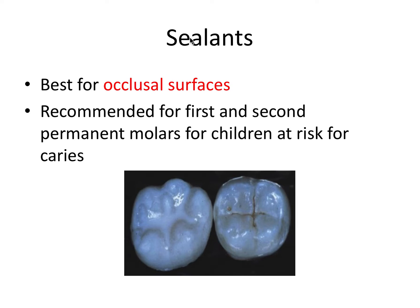Sealants are recommended for first and second permanent molars for children at risk for caries. They smooth over the fossa and grooves of these teeth that are most susceptible to cavities. Sometimes these crevices are so tiny that toothbrush bristles can't effectively clean them, giving bacteria a place to thrive. Sealants help prevent caries in these regions, but must be paired with excellent oral hygiene.